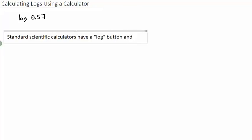Okay, so this video is just about using a calculator to calculate logs. Let's say I want to know log of 0.57. Well, the good news is standard scientific calculators have a LOG button and an LN button. That's for log base 10 and the natural log, which is base E.